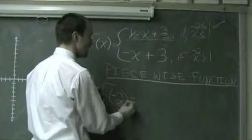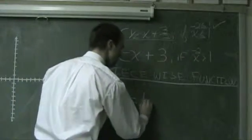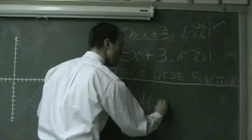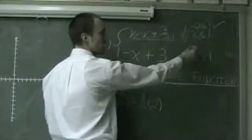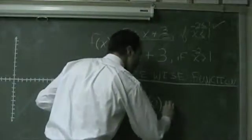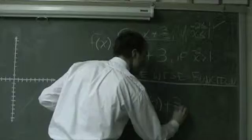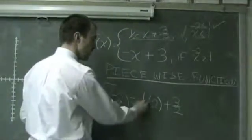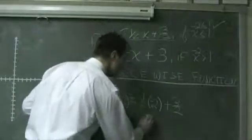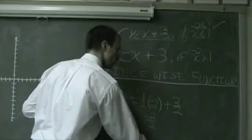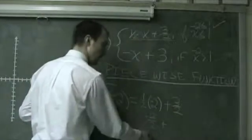So the function value at negative 2 is 1/2 times the quantity negative 2, which again is the value of x that I'm substituting in, plus 3/2. Simplifying down, I've got 1/2 times negative 2, which gives me -2/2, or negative 1.